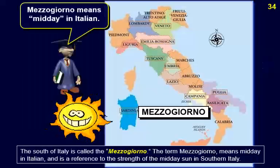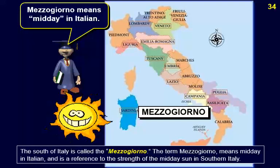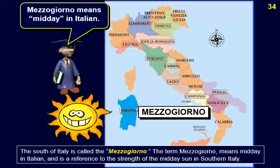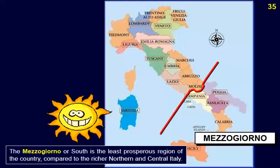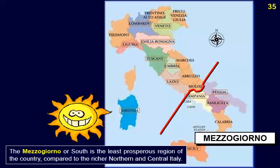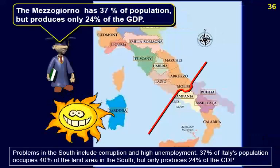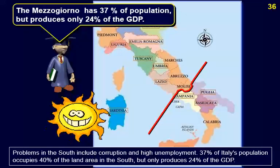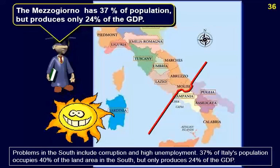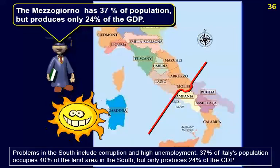The south of Italy is called the Mezzogiorno. The term Mezzogiorno means 'midday' in Italian and is a reference to the strength of the midday sun in southern Italy. The Mezzogiorno is the least prosperous region of the country compared to the richer northern and central Italy. Problems in the south include corruption and high unemployment. 37% of Italy's population occupies 40% of the land area in the south but only produces 24% of the GDP.